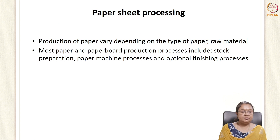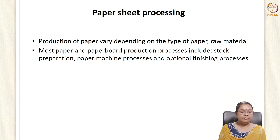Sheet processing is the production process that depends upon the raw material and type of paper required in the final stage. For most paper and paperboard productions, this includes stock preparation, paper machine processing, and finishing process.